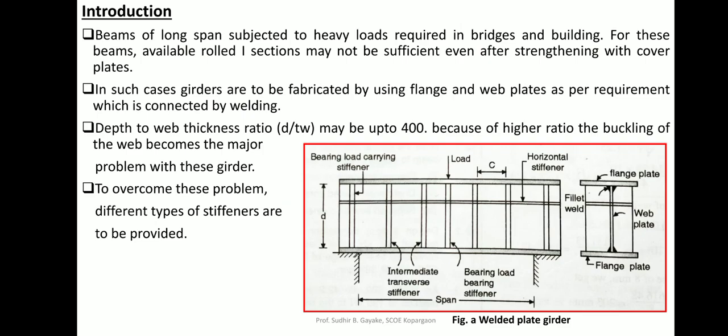Looking at the cross-section, it is similar to an I-section but with additional plates attached. Stiffeners are added between the flange plates and the web plate. In flexural member design, flanges are designed to carry bending moments while the web transfers shear forces and concentrated loads. The vertical web portion transfers shear force and the flange plate carries the bending moment, transferring it to the supports.